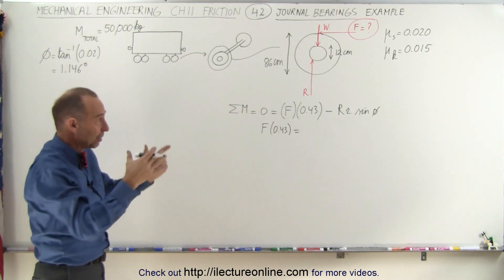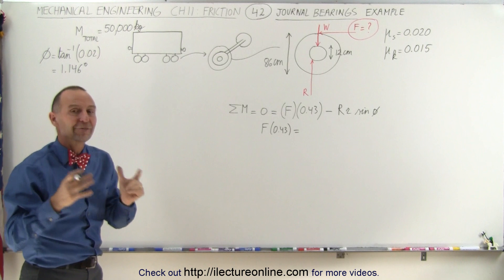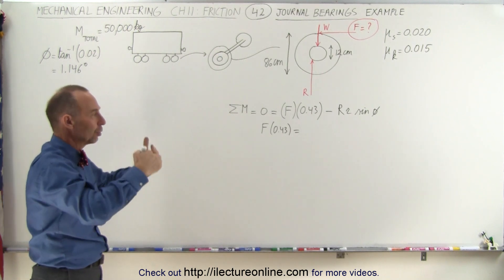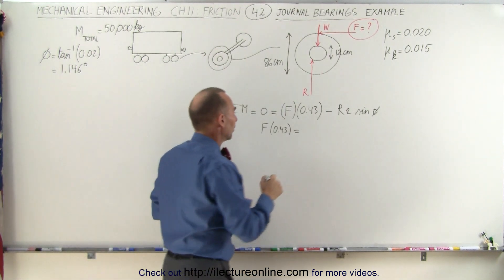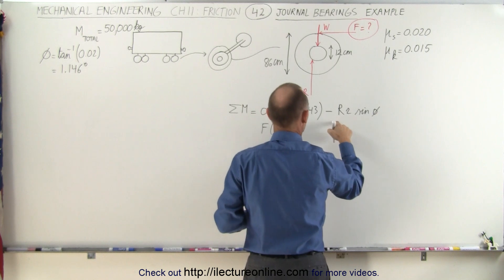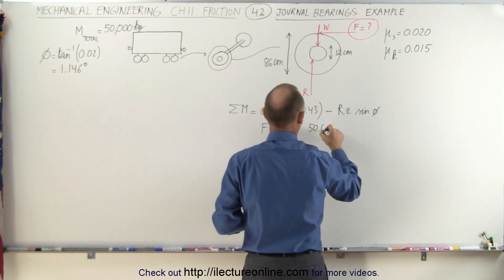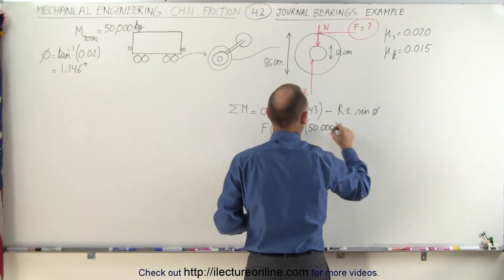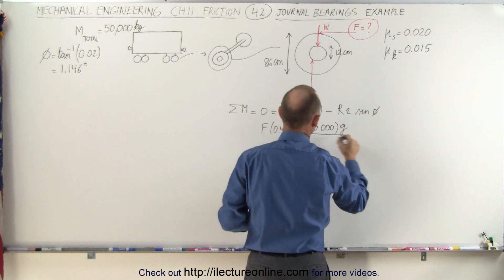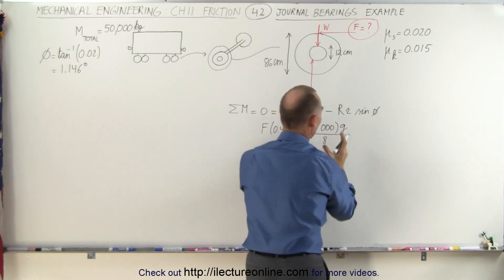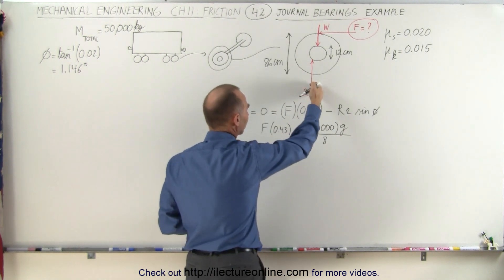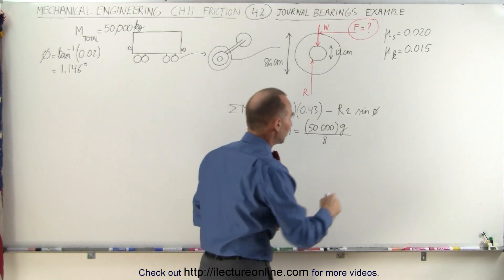multiply times g to get the total weight of the car, and divide by eight because we're dividing the load over eight wheels. So we take R, which is 50,000, multiply times acceleration due to gravity g, divided by eight. This would be the weight on each wheel, which is therefore also the reaction force on each wheel caused by friction.